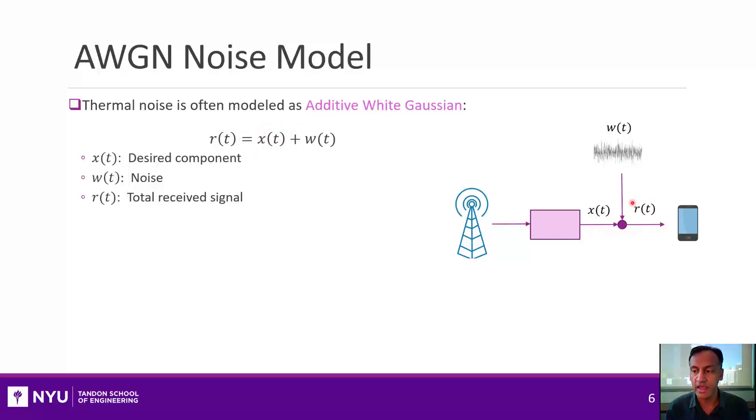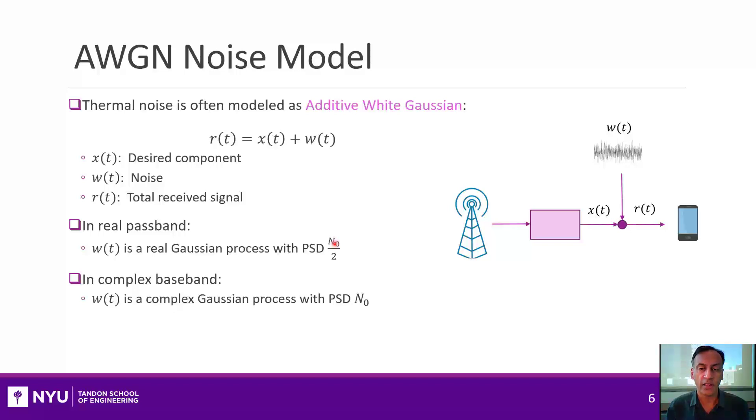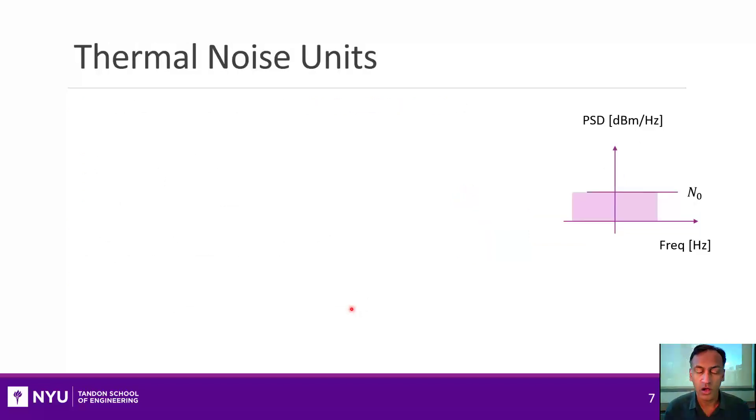Alright, so let's talk a little bit then about how we model thermal noise. Typically the simplest model, mathematically, is to model as an additive white Gaussian source. So let's say you have a signal X of T, which is coming from the transmitter, and your receiver will then just get the sum of that desired signal plus the additive white Gaussian noise, W of T. Now, this representation could apply either in the real passband, that is, when it's at the carrier frequency. In this case, all these signals are real valued, and the power spectral density of W of T would be typically denoted by N0 over 2, because there are two images, both below 0 and above 0. We'll mostly, though, deal with it in the complex baseband, which is what you would get after you downconvert. And in this case, the power spectral density would be N0, and all the signals will be complex.